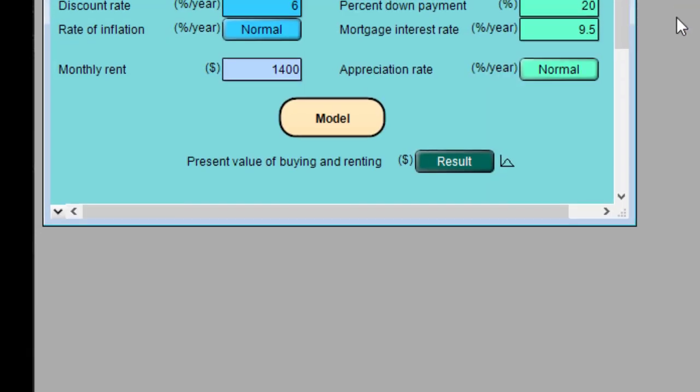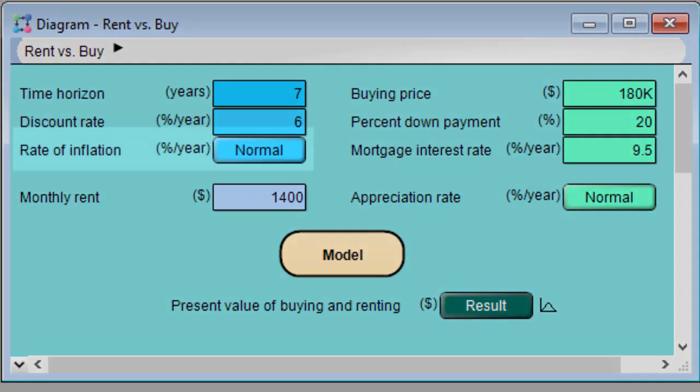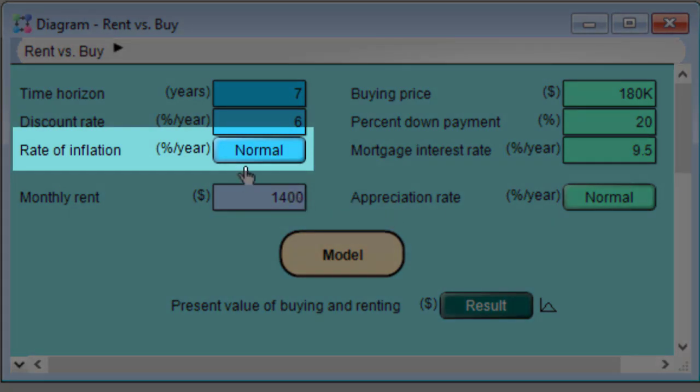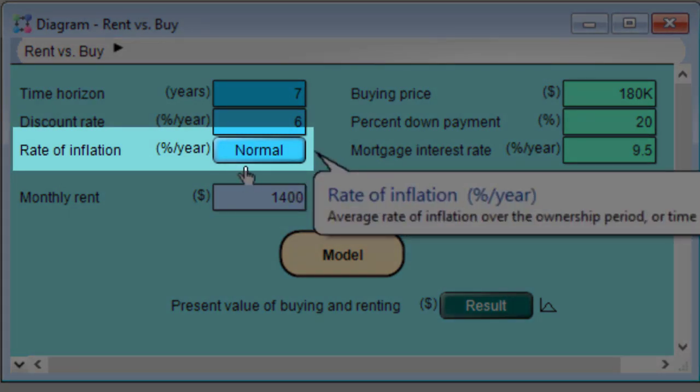When an input is defined as a probability distribution, a button with the name of the distribution appears to the right of the input's name. So the button for rate of inflation says normal, indicating it's defined as a normal distribution.